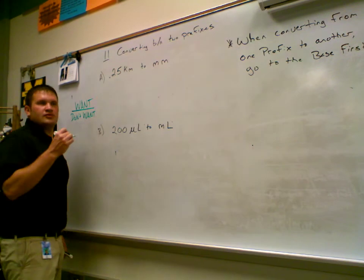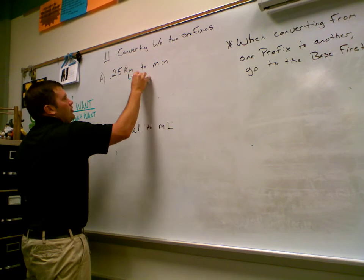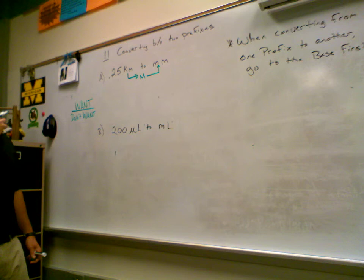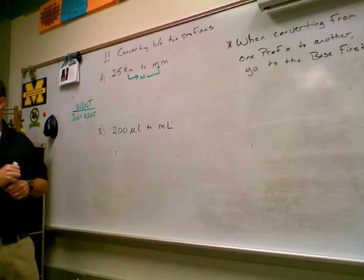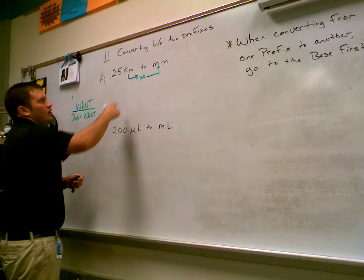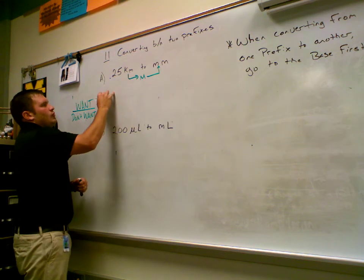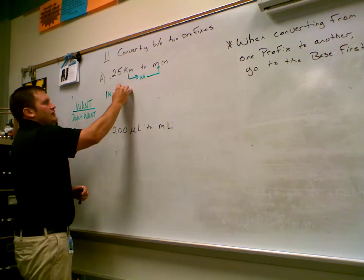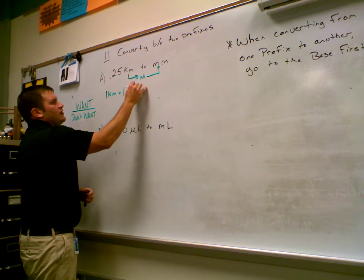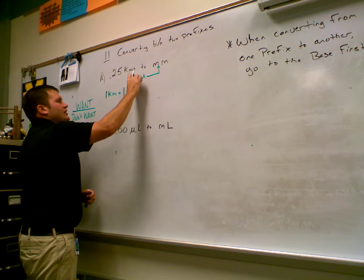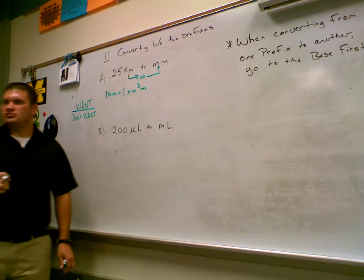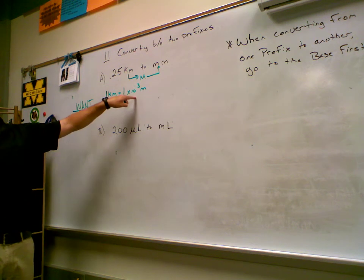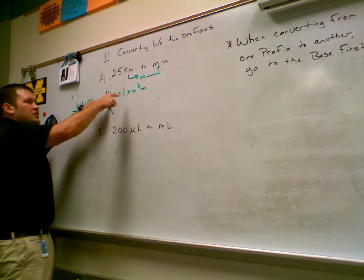The base is meters, so I'm going to meters first and then back to millimeters. How many conversion equations am I going to need? Two — kilometers to meters first. Looking at the table, one kilometer equals one thousand meters, or one times ten to the third meters. I got that from my chart because kilo means ten to the third.